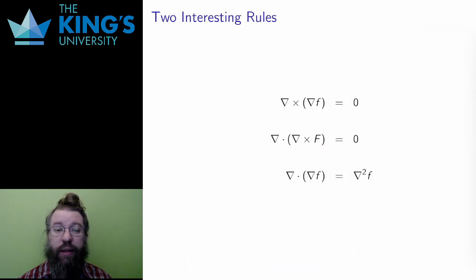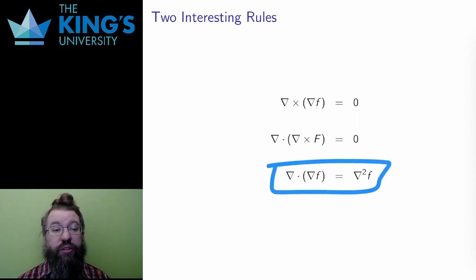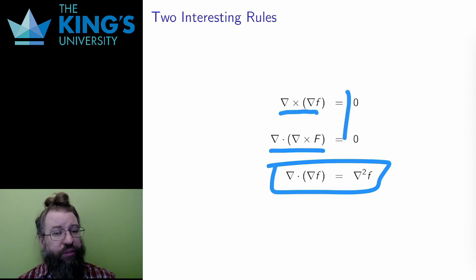Finally, let me ask what happens when I do one of these after another. I already have one example. The Laplacian is the divergence of the gradient. It's an important operation, but it's the outlier for the composition of these operators. The other two operations that are natural to consider, the curl of a gradient and the divergence of a curl, are both zero.